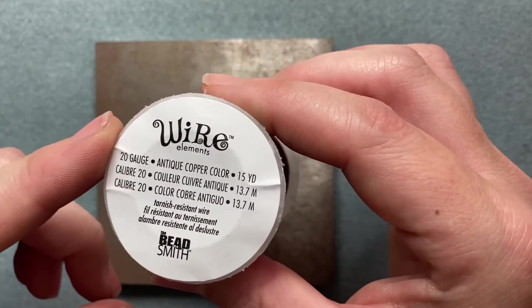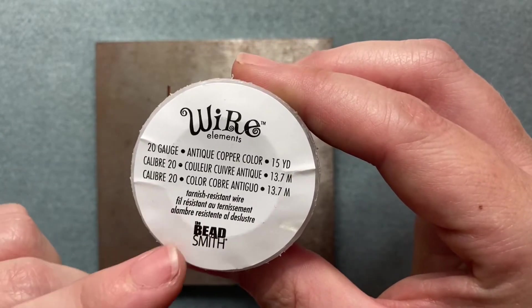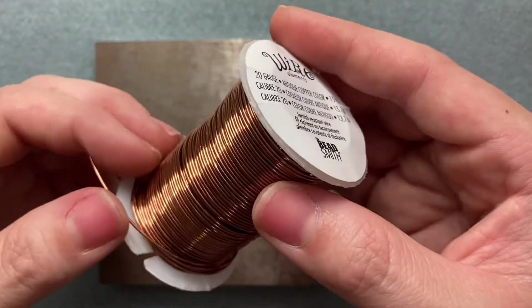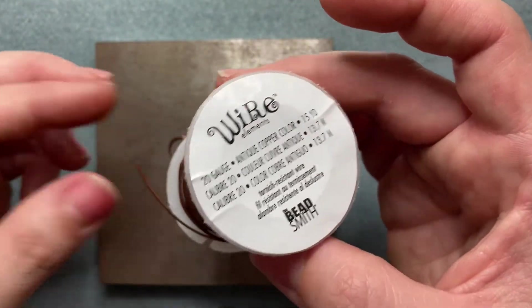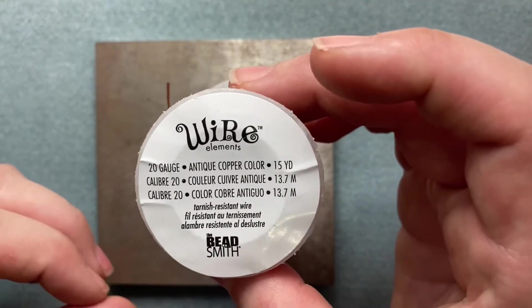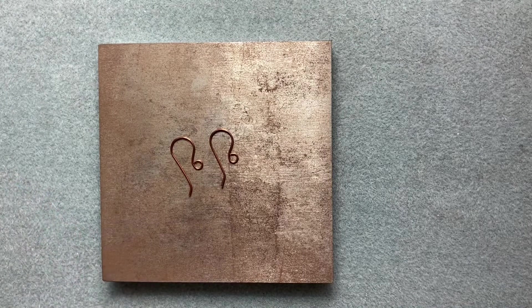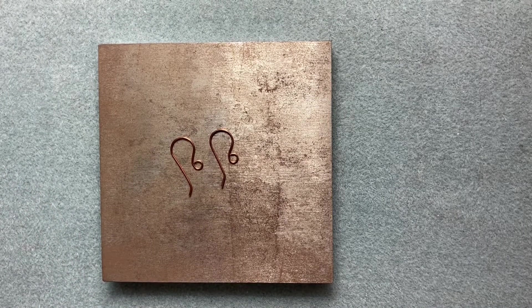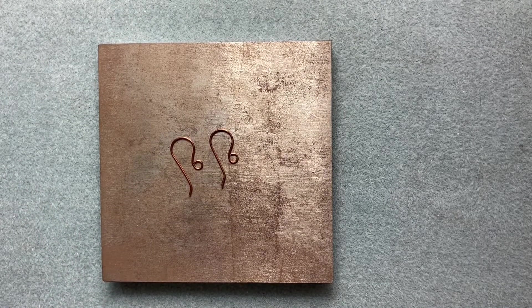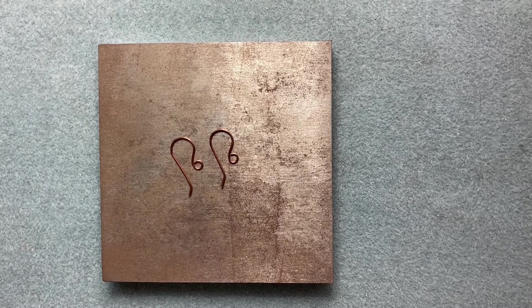This is a 20 gauge antique copper color wire from Bead Smith. This is a dead soft wire. I like to use dead soft when I am practicing and for beginners, but I highly recommend if you're wanting a finished piece to go along with your earring creations to use half-hard. Half-hard is just sturdier and keeps its shape longer.